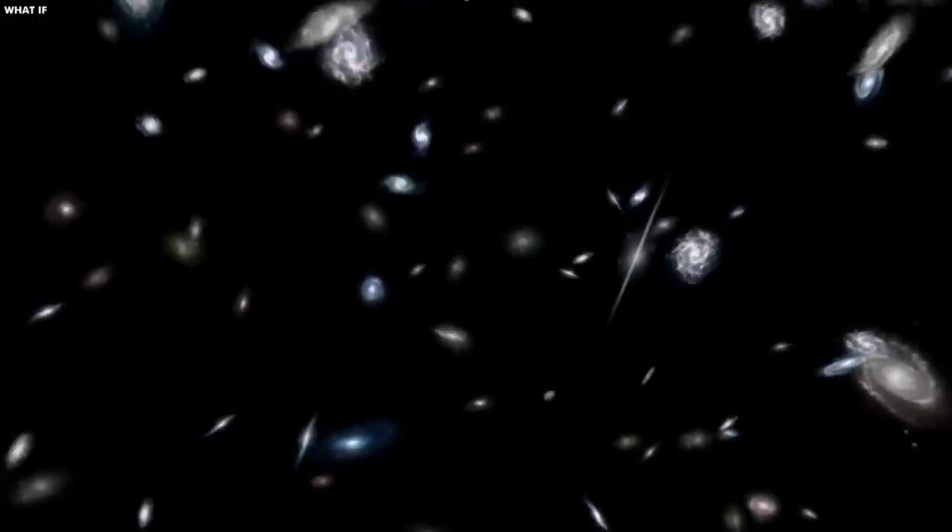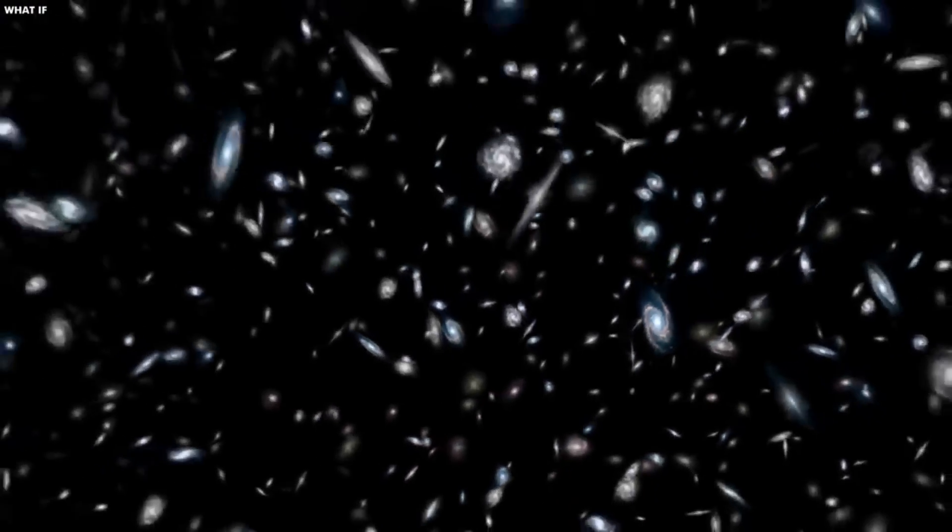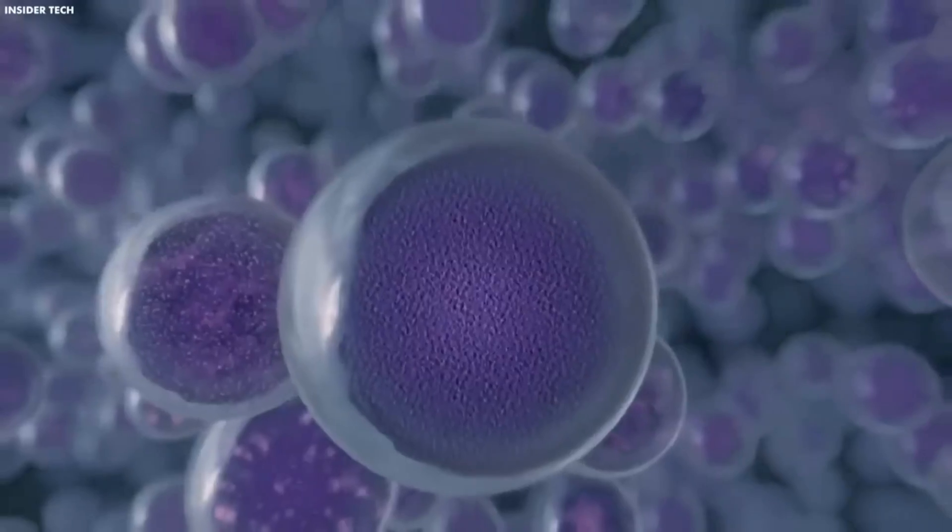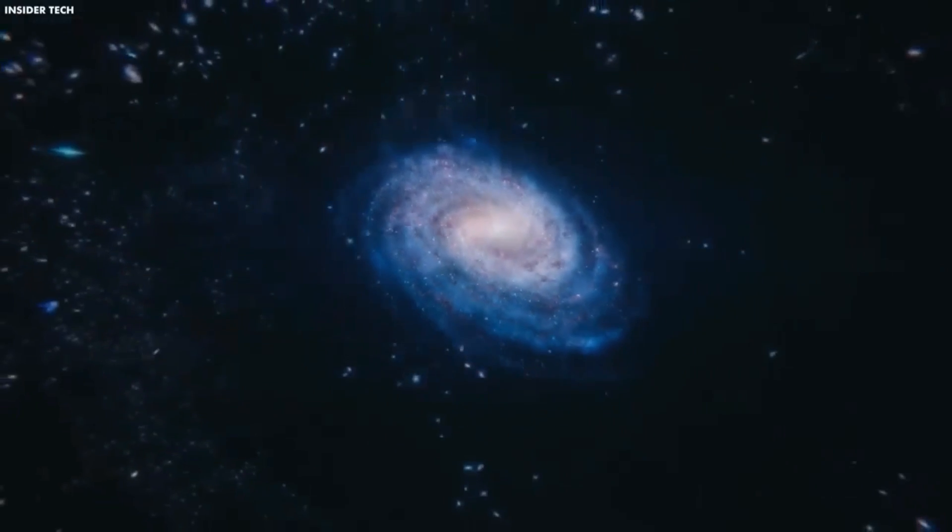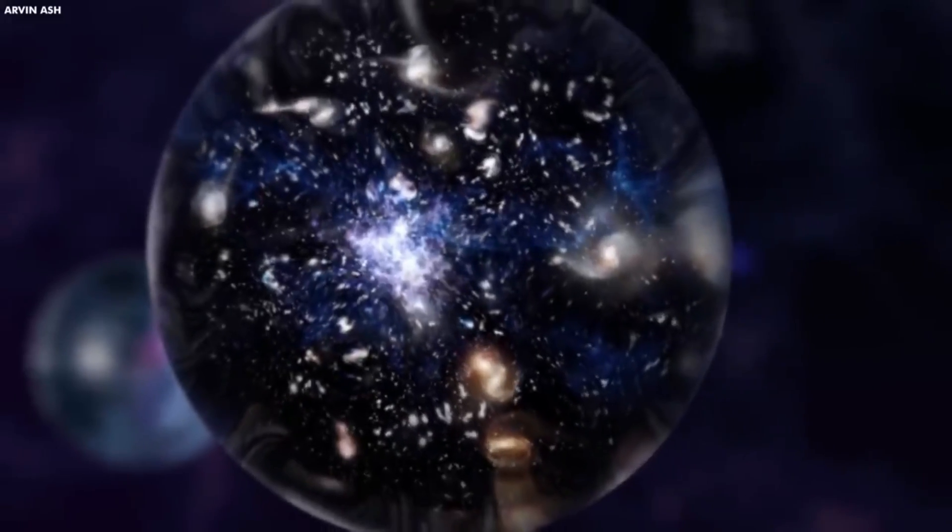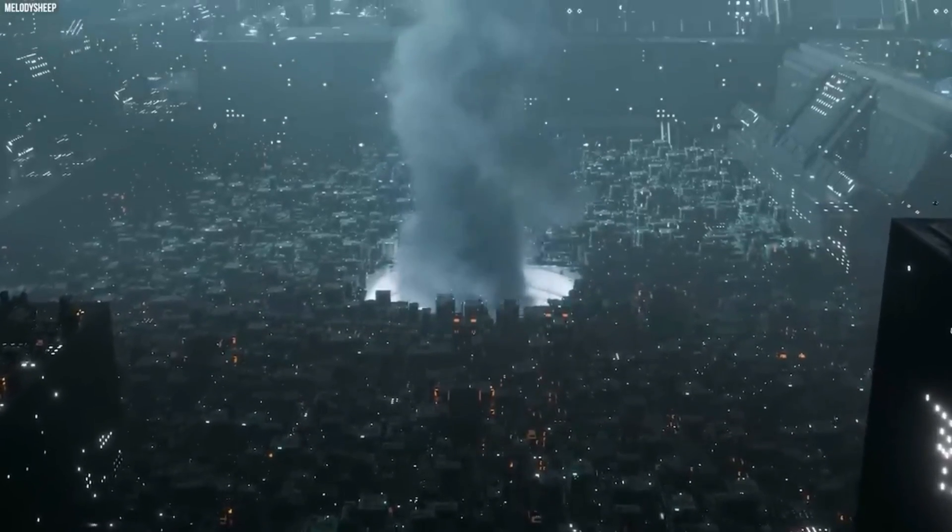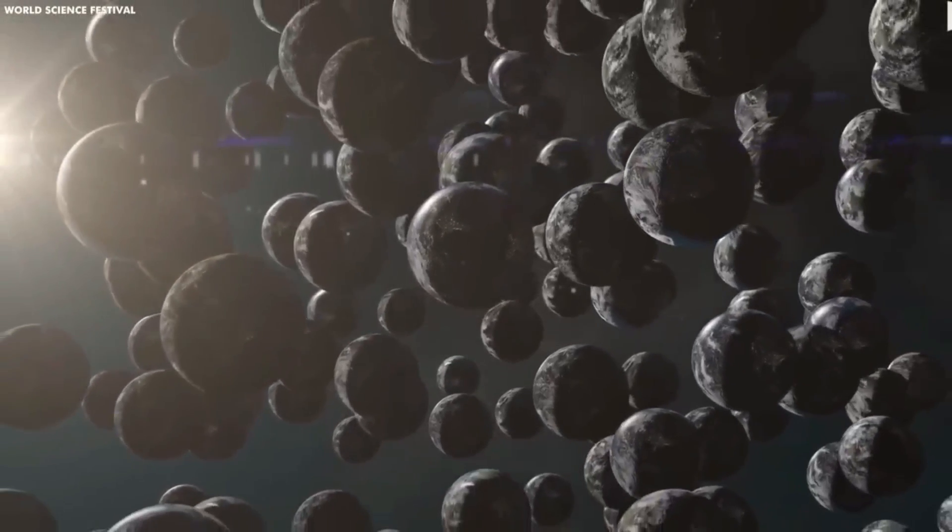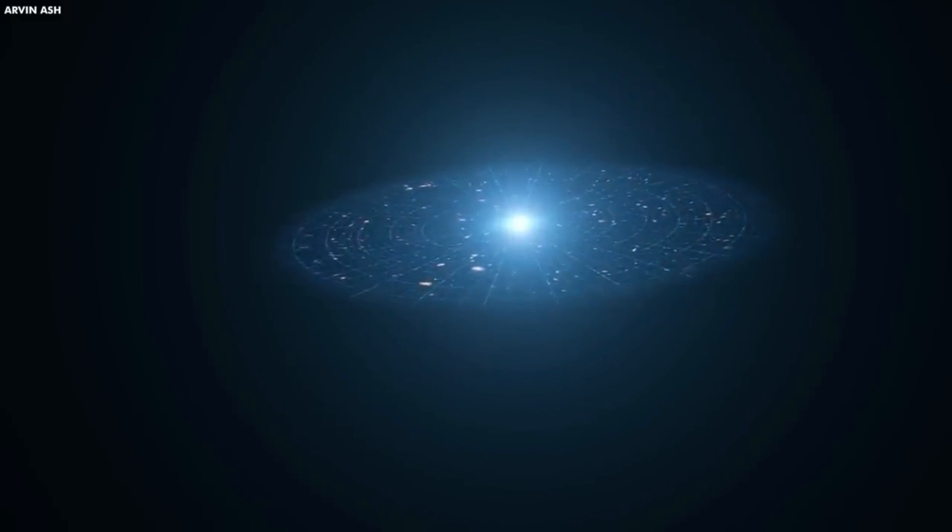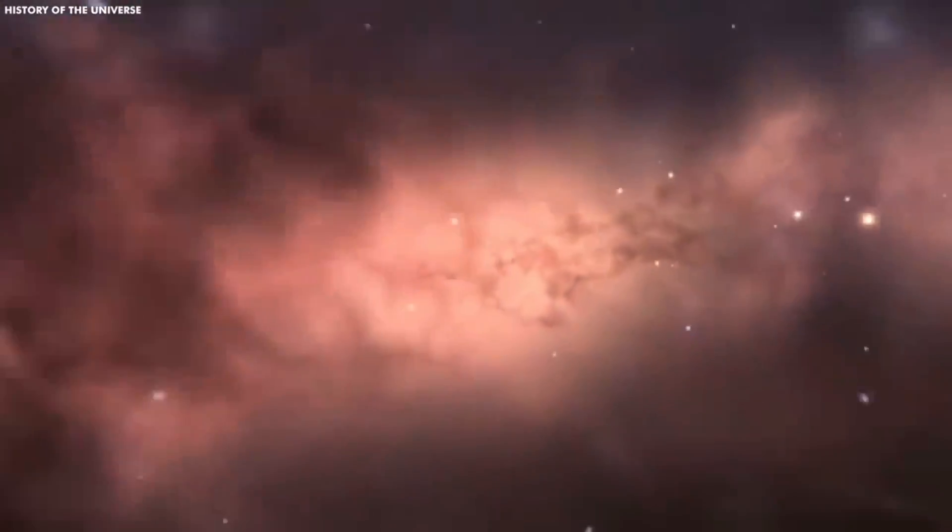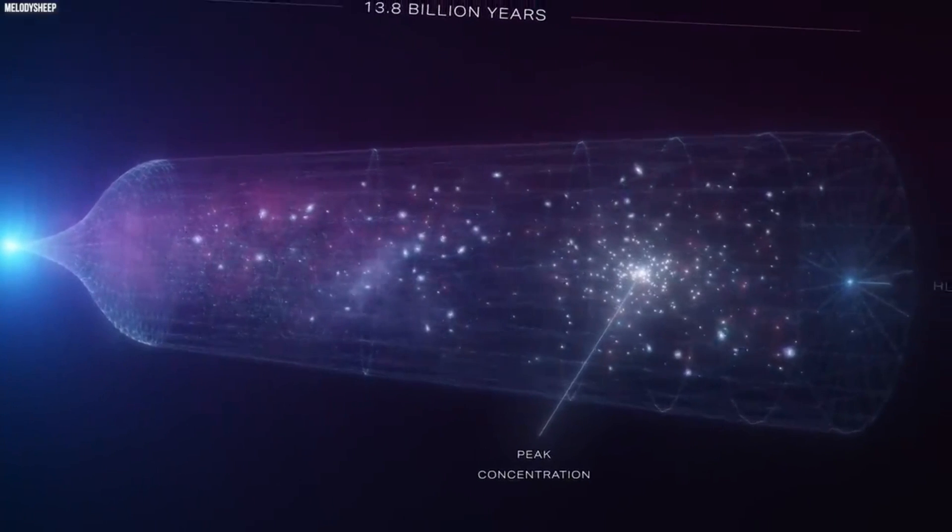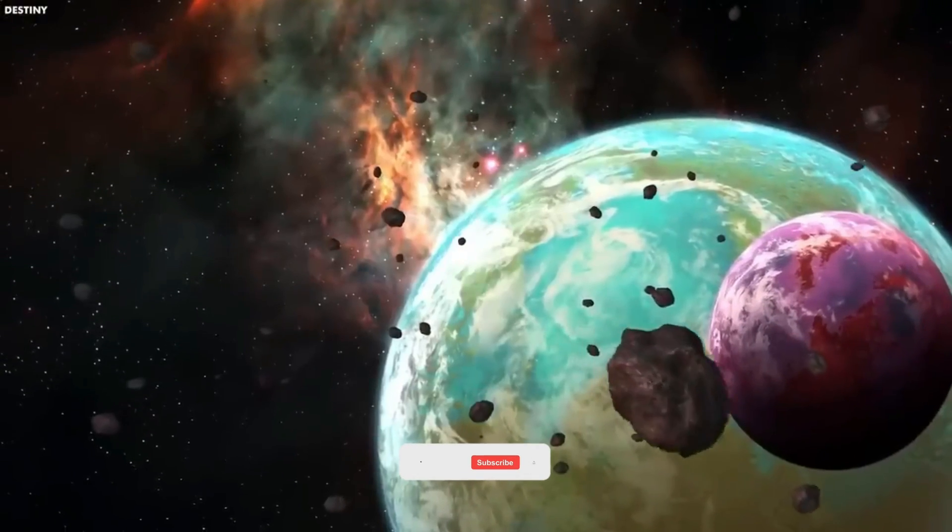The first is the many-worlds interpretation, which holds that every possible outcome of every event results in the creation of a new universe. So in essence, there is a universe where you took a left instead of a right. Next up, the bubble universe interpretation, which suggests that our universe is just one of many floating in an infinite void. These universes could be completely different from our own, or they could be carbon copies with minor differences. Finally, the branches interpretation asserts that our universe is constantly splitting into multiple universes as a result of our decisions. So who knows, maybe there's a universe where you're a superhero?